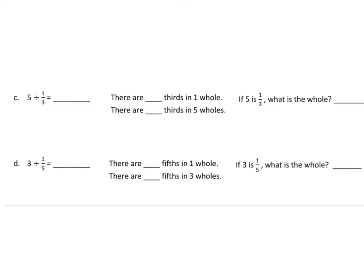With the first group of problems, they want you to fill in the blanks and draw a tape diagram and number line to solve. Let's start with the first problem: five divided by one-third. We'll draw our tape diagram. Our whole is five, so we'll bracket the top and put a five.